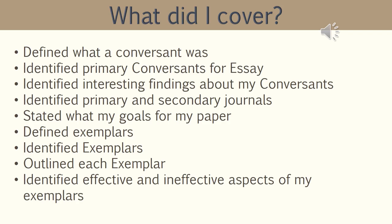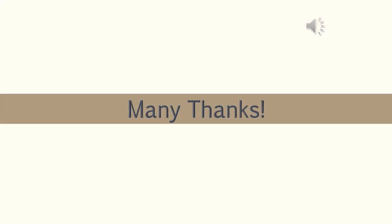We have come to the conclusion of this short presentation. What did I cover? I defined what a conversant was, identified primary conversants for my essay, identified interesting findings about my conversants, identified primary and secondary journals, stated my goals and what I want to accomplish, defined exemplars, identified examples I want to use for my paper, outlined each exemplar, and finally identified effective and ineffective aspects of my exemplars. Thank you for watching this presentation. I hope you found it interesting and that you have learned something. Thanks.